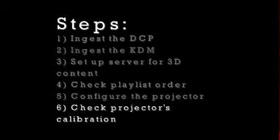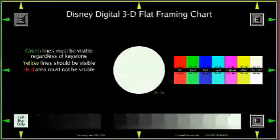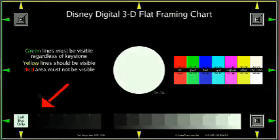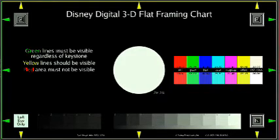Step 6: Check your projector's calibration. First, load the Disney Digital 3D alignment chart. Make sure the picture is in 3D — grab a pair of 3D glasses and look in the bottom left corner for the white box that reads Left Eye Only. Close your right eye while looking at the box and make sure the words Left Eye Only remain visible. If you can't see the text with your right eye closed, your projector is out of phase. Contact your supervisor for help.